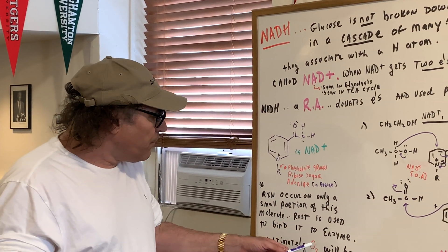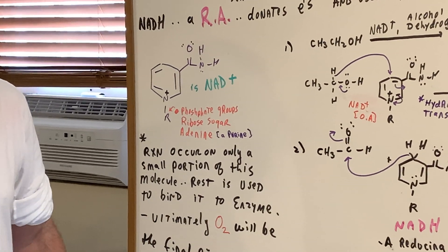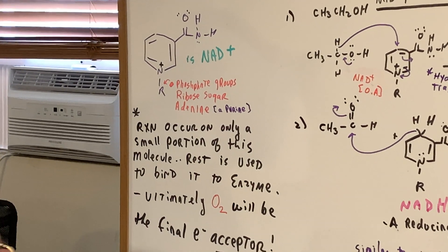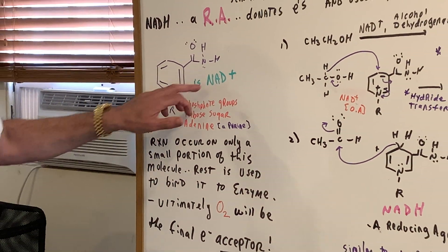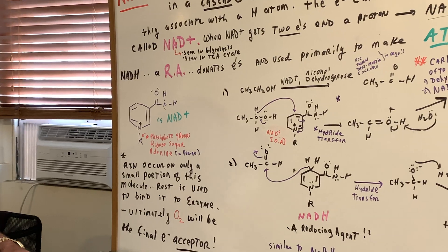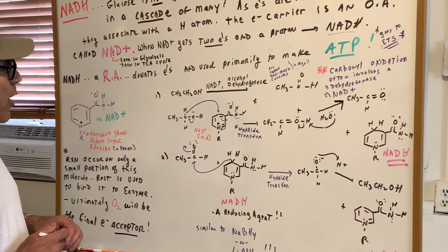Now, ultimately, oxygen will be the final electron acceptor. Make sure you know that. That's a guaranteed question. If I ever said, who's the final electron acceptor? It's oxygen, but this is going to start the ball rolling. Now, let me show you how this works.